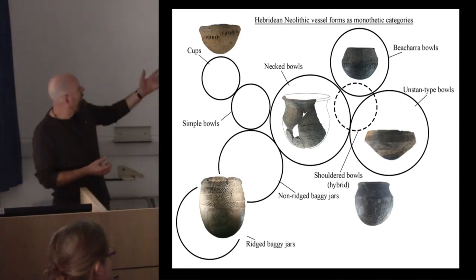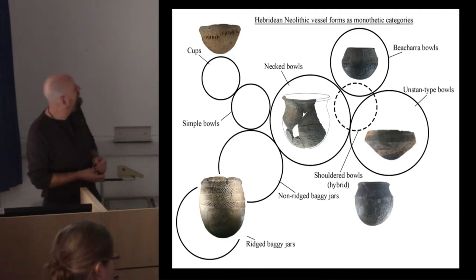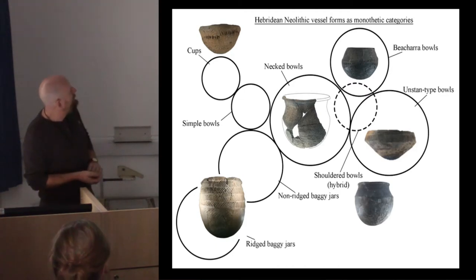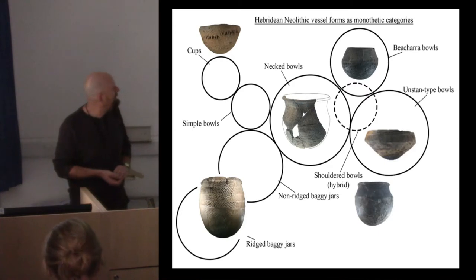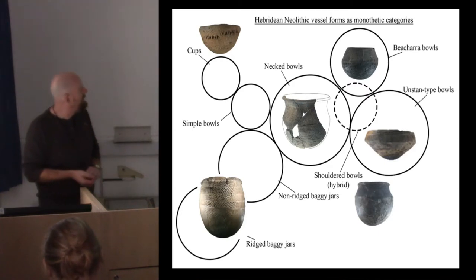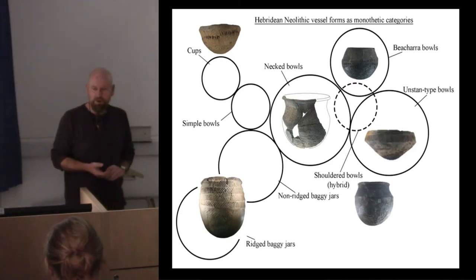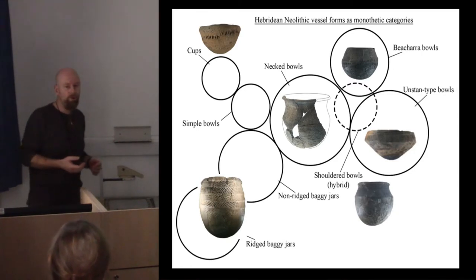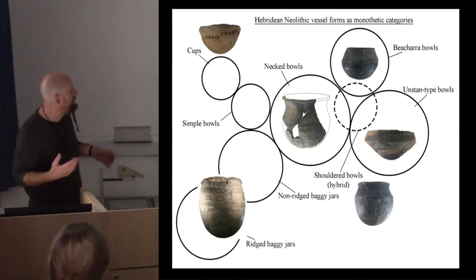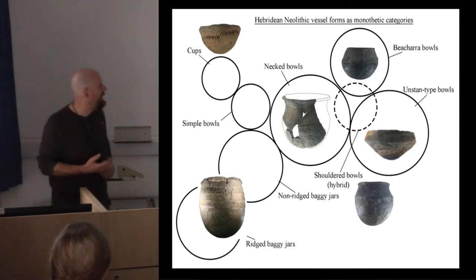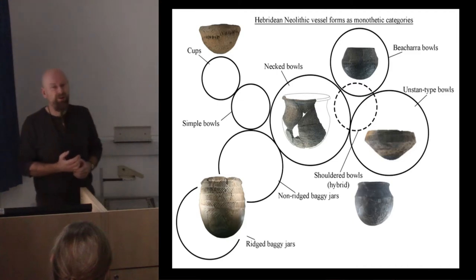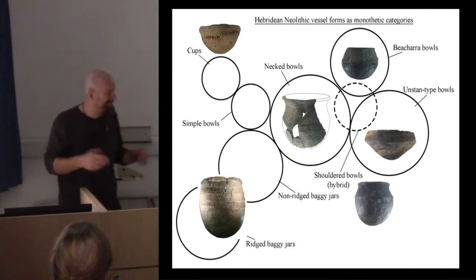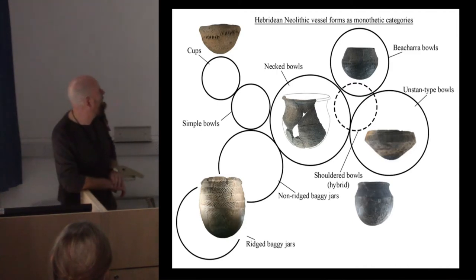Here are some examples of vessel styles from the Hebrides. A couple of them are named after type sites. The Unstan-type bowls are named after large mortuary vessels found in tombs in Orkney — which is ironic, because most of them are not large, not from mortuary contexts, and not from Orkney. They're actually from the Western Isles. The Acara bowls, named after tombs in the south-west of Scotland, are also found in the Hebrides.